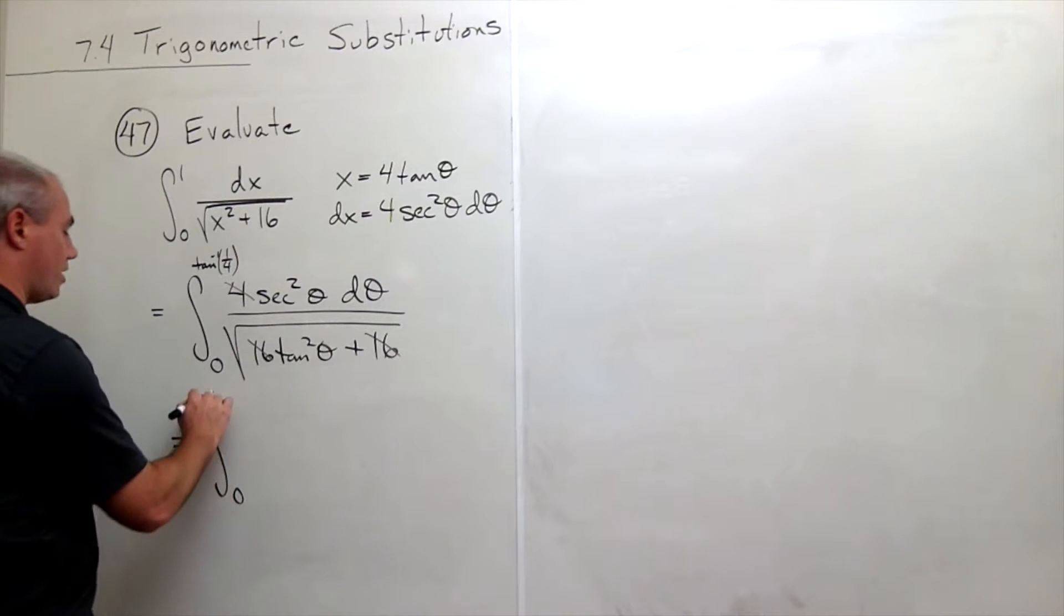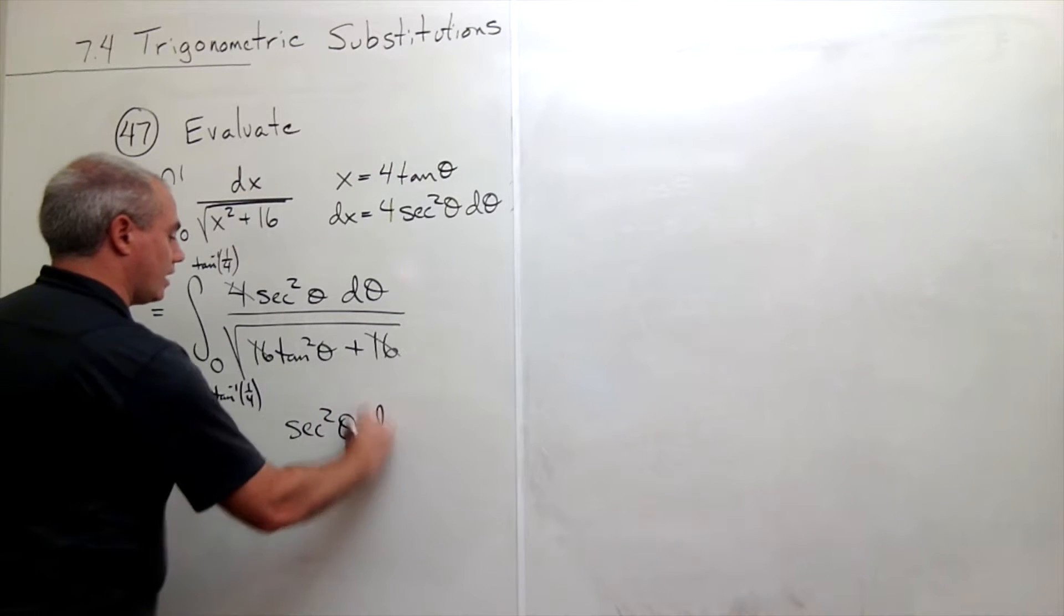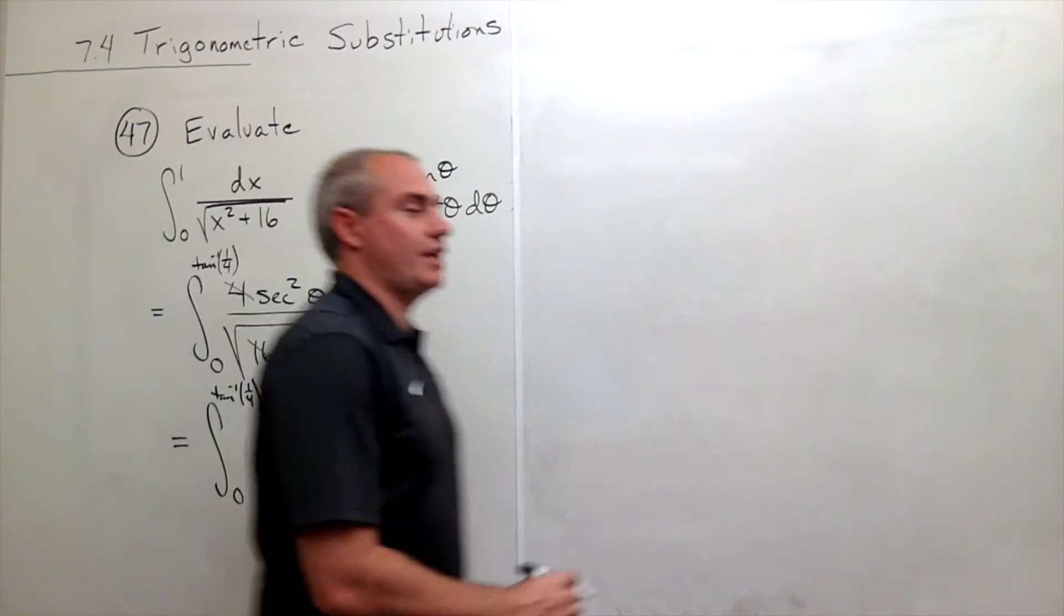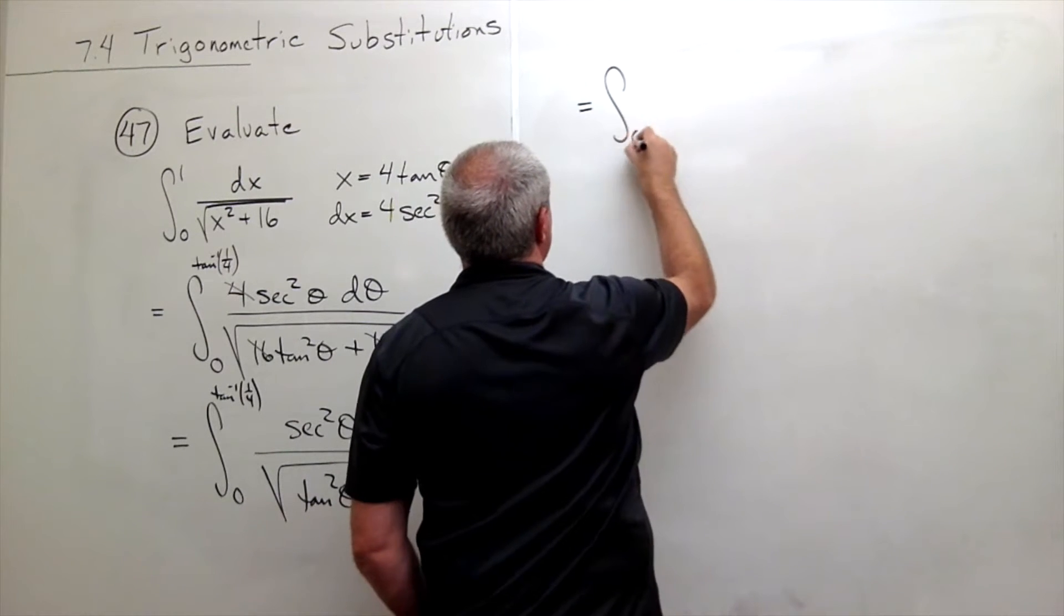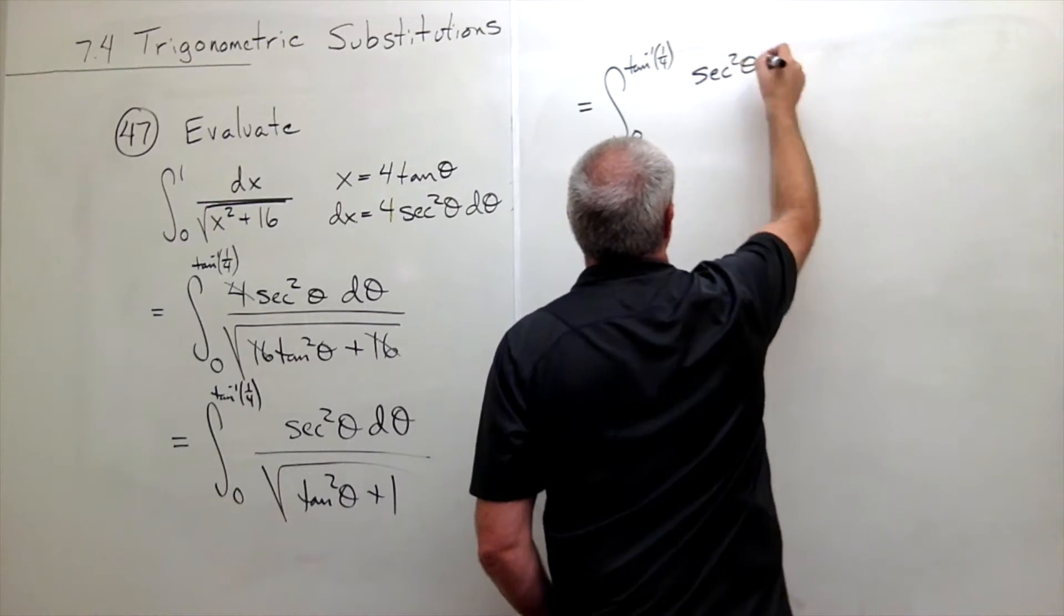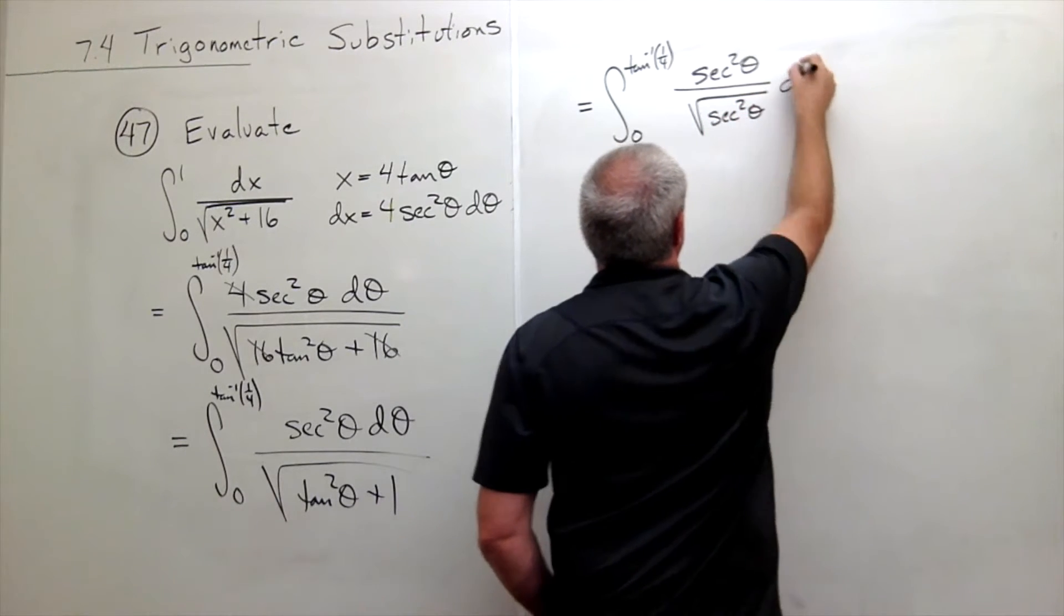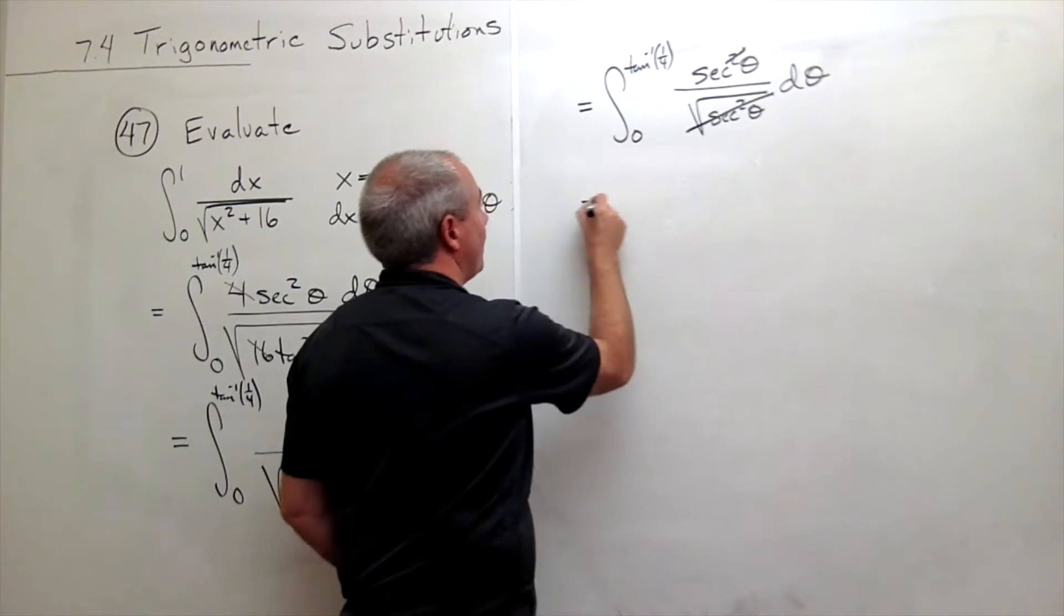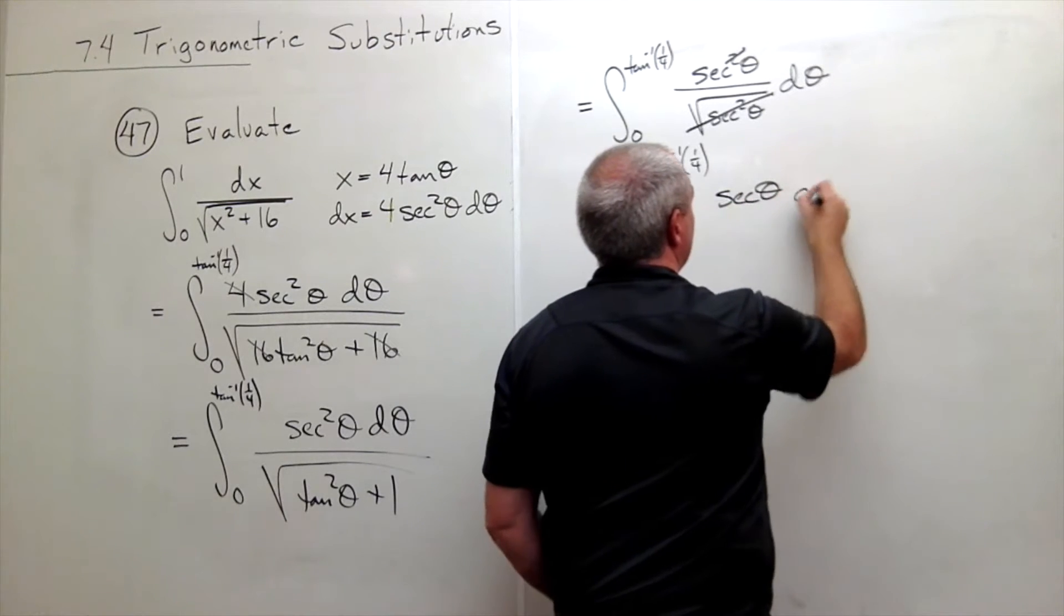Now I can rewrite this integral as the integral from 0 to tan inverse of 1 fourth of secant squared theta d theta divided by the square root of tan squared of theta plus 1. And of course, tangent squared theta plus 1 is otherwise known as secant squared theta. So we could rewrite this as integral from 0 to tan inverse of 1 fourth of secant squared theta divided by the square root of secant squared theta d theta. Of course, the square root of secant squared theta is secant, so that's one secant which cancels one secant up here, and I'm left with the integral from 0 to tan inverse of 1 fourth of secant theta d theta.